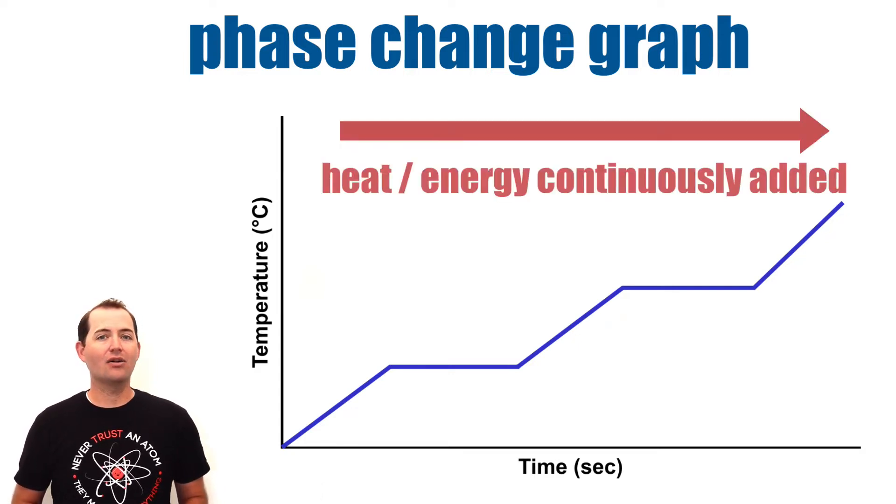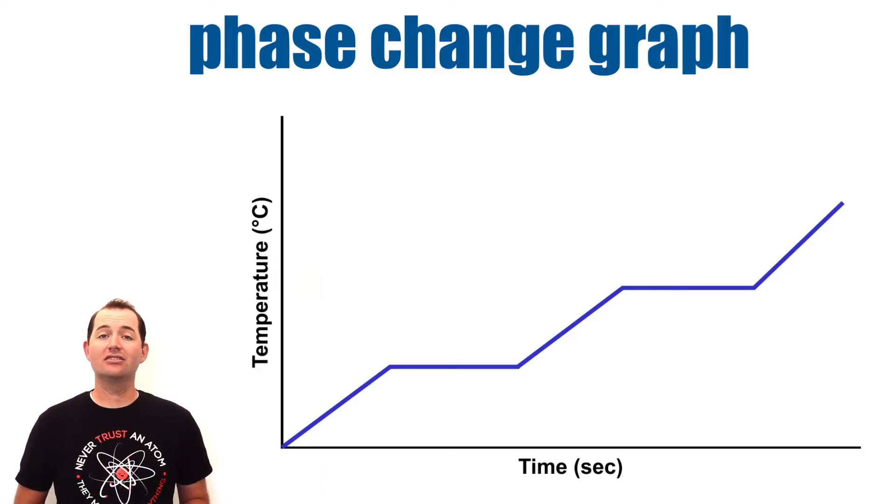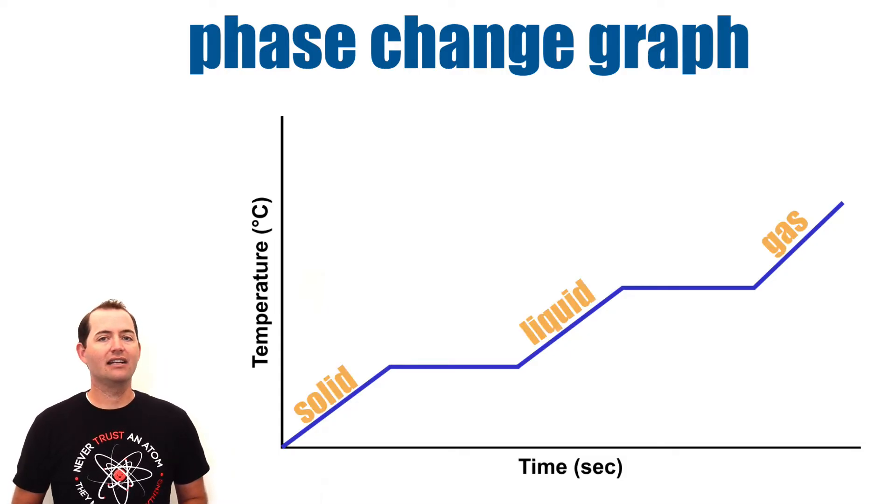As time progresses, heat or energy is continuously added to the substance. There are sections on the graph that represent all three states of matter: solid, liquid, and gas.